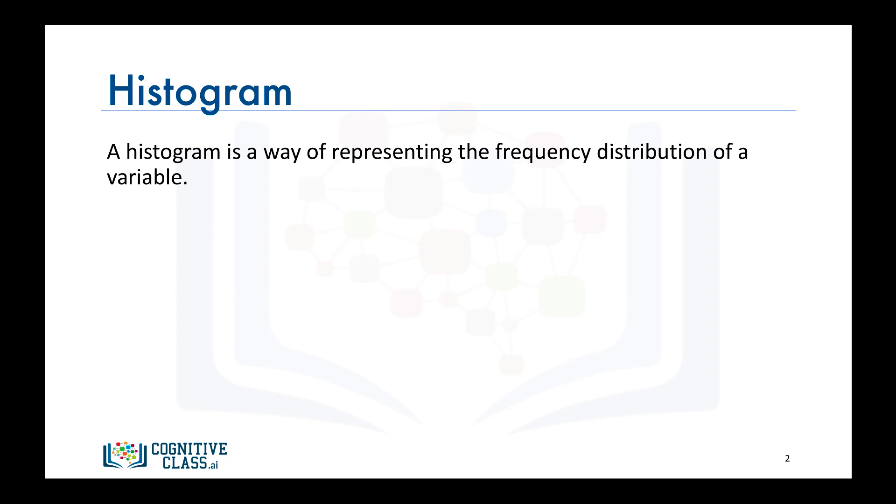The way it works is it partitions the spread of the numeric data into bins, assigns each data point in the dataset to a bin, and then counts the number of data points that have been assigned to each bin. So the vertical axis is actually the frequency or the number of data points in each bin.